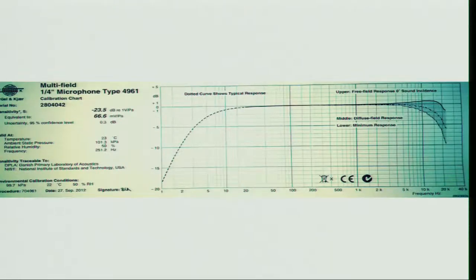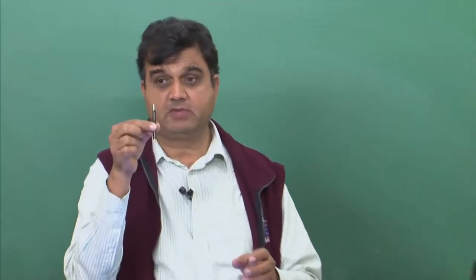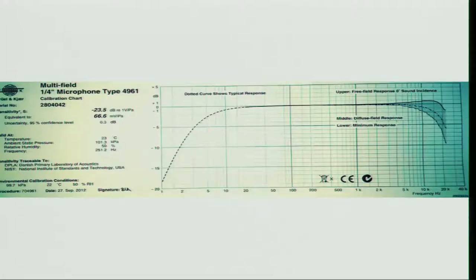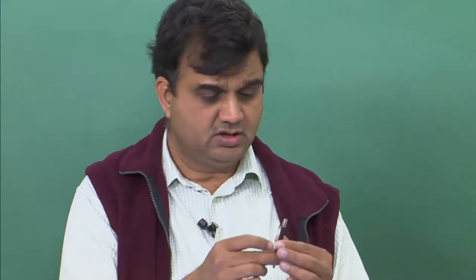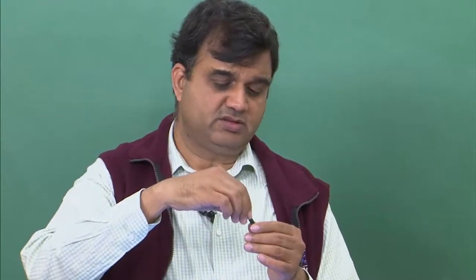What I have here is the data sheet of a microphone 4961. I am going to show you that microphone and we will go line by line. This is the microphone I am talking about — it says it is a multi-field one-fourth inch microphone, type 4961. So 4961 is a number which the manufacturer has given us, and this actually is the microphone.